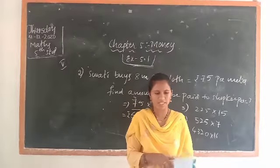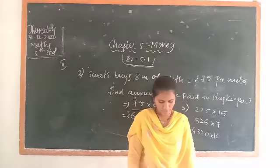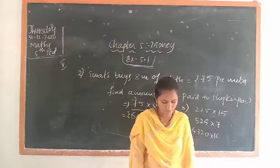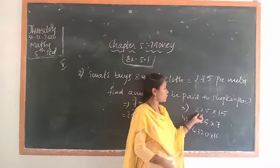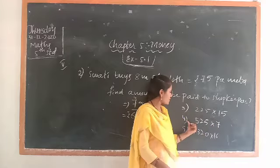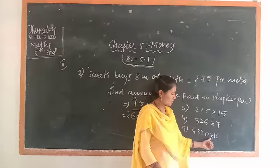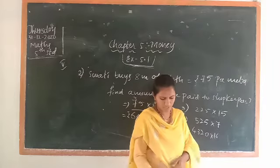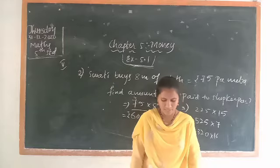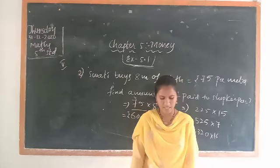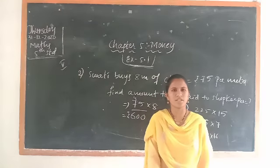I think the fifth main multiplication is completed. I solved 2 questions. Now take the remaining 3 questions on your own: third — multiply 225 into 15; fourth — 525 into 7; fifth — 4,320 into 16. The sixth main is on division, which I will explain in the next class. Bring your answers for correction. Thank you.